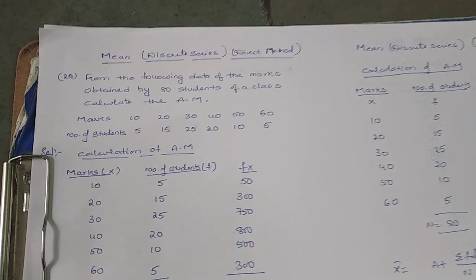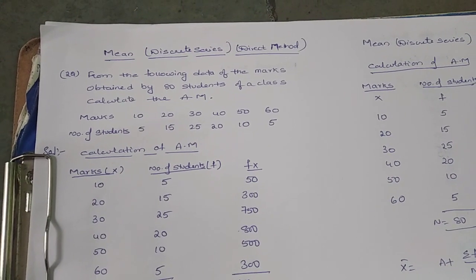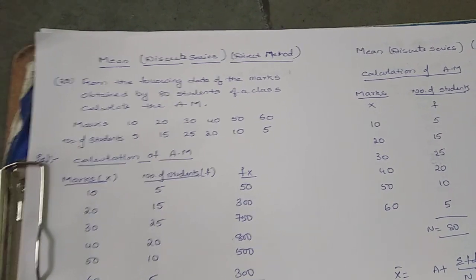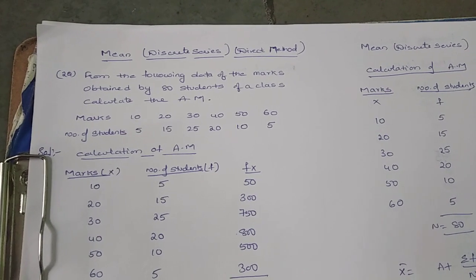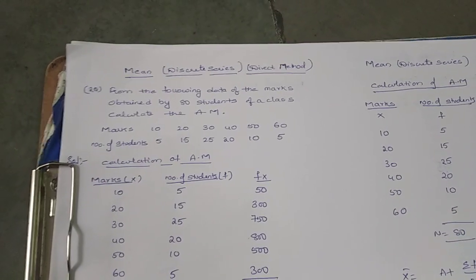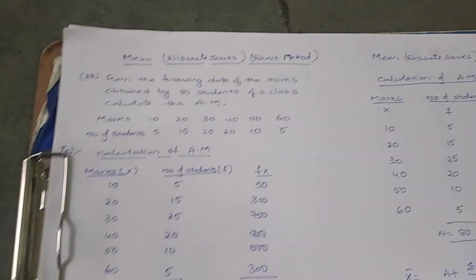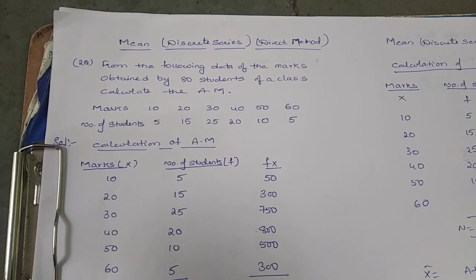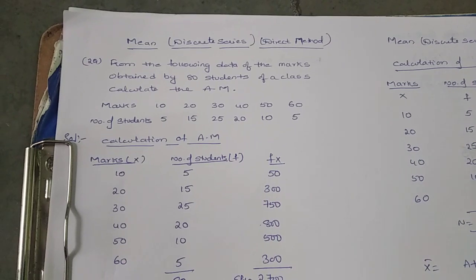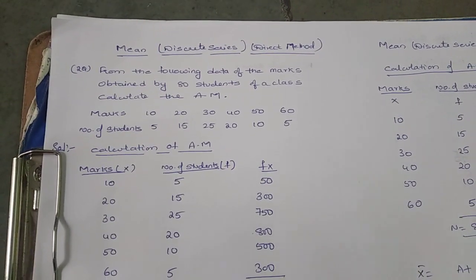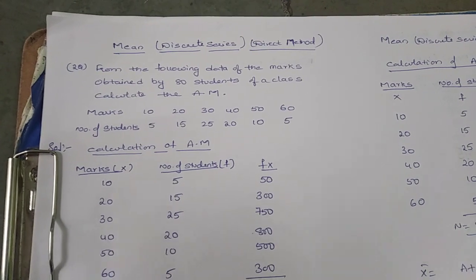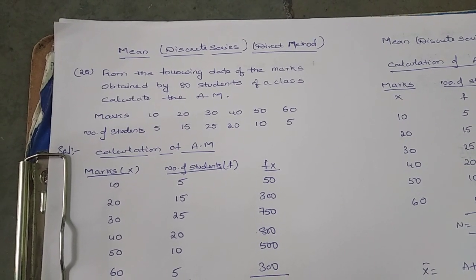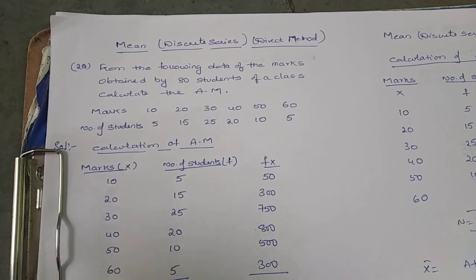First, how do we identify whether a question is individual, discrete, or continuous series? Looking at the question: 'From the following data of marks obtained by 80 students of a class, calculate the arithmetic mean.' Marks given are 10, 20, 30, 40, 50, and 60, and the number of students is 5, 15, 25, 20, 10, and 5.